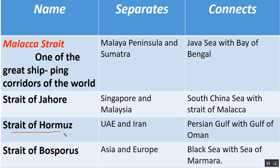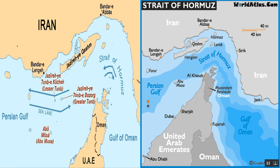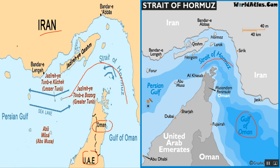The Strait of Hormuz separates the United Arab Emirates and Iran, and connects the Persian Gulf with the Gulf of Oman. Here on the map is the Strait of Hormuz, separating the UAE and Oman from Iran, connecting the Gulf of Oman with the Persian Gulf.